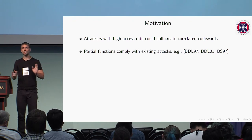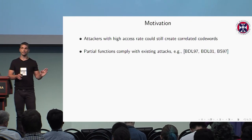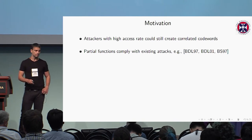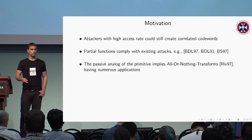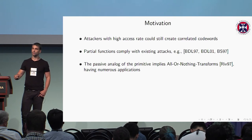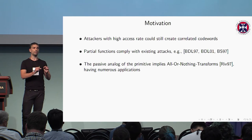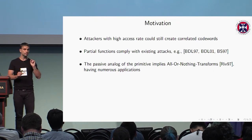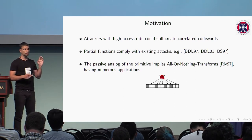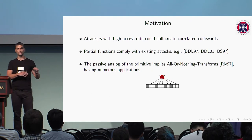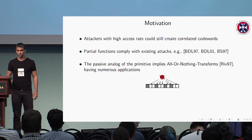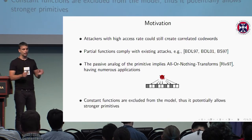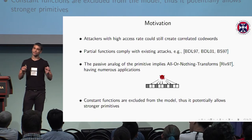Secondly, partial functions is a model that complies with real-world attacks — attacks that can recover the private state of a primitive by doing only small modifications over its private state. Third, the passive analogue of this model, when the adversary is only reading codeword locations rather than modifying them, implies all-or-nothing transforms, a primitive introduced by Rivest in 1997 with numerous applications. And finally, constant functions are excluded from the model, so potentially we can achieve stronger primitives.